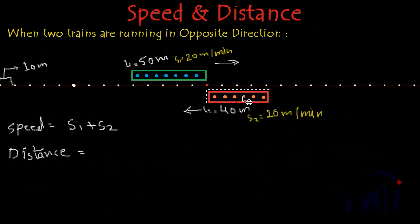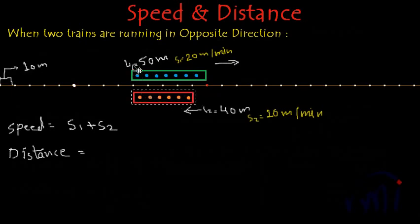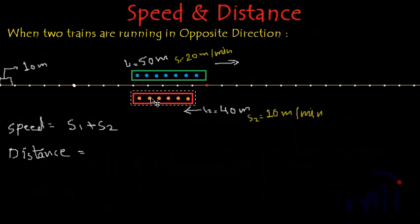The red train is running towards the green train. This is the point where the two trains are just about to start crossing. The green train is assumed stationary. The front end of the red train is in complete alignment with the front end of the green train and now it starts running. Its front end moves until the rear end of the green train aligns with the front end of the red train — and by then the red train has traveled a distance equal to the length of the green train, L1.